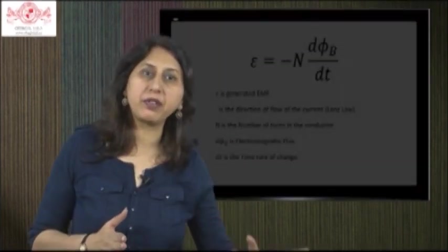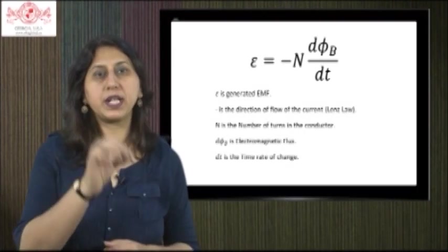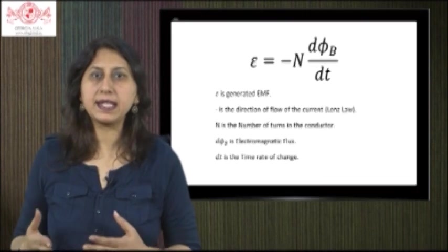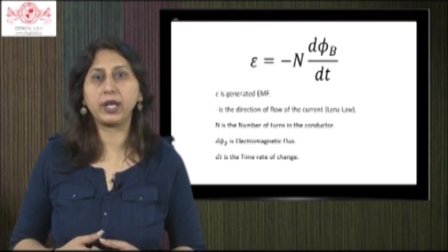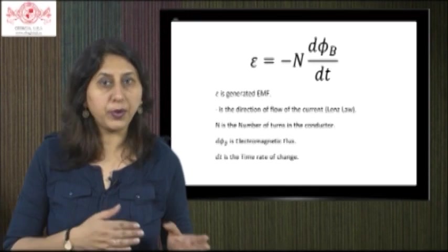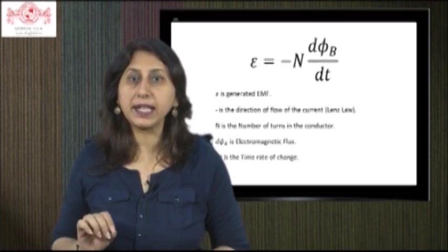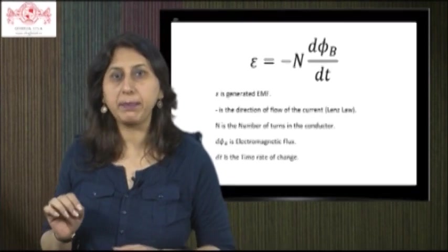Faraday's second law states that the magnitude of induced EMF is equal to the rate of change of flux linkage. ε = -N dΦ/dt, where ε is the induced EMF, N is the number of turns of coil, and dΦ/dt is the rate of change of flux. The minus sign represents that the induced EMF or current sets up in a direction so as to oppose the cause of it.